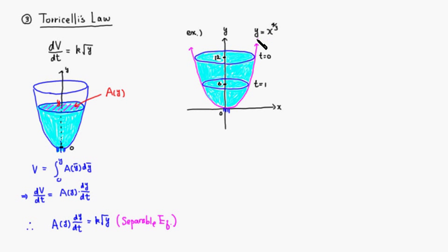Let's say you have a tank whose curve is determined by this equation: y equals x to the four-thirds. Then use that curve to rotate it about the y-axis to form this tank.